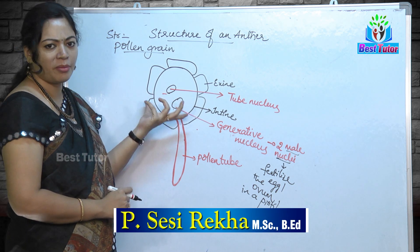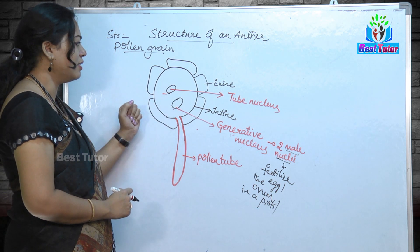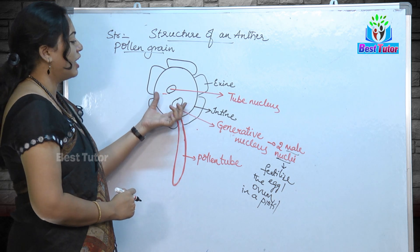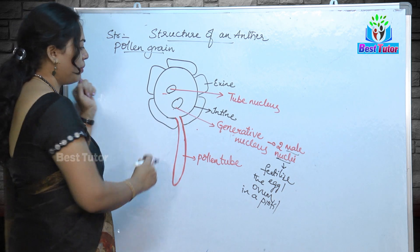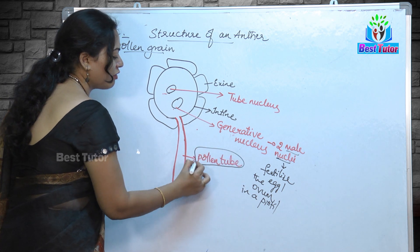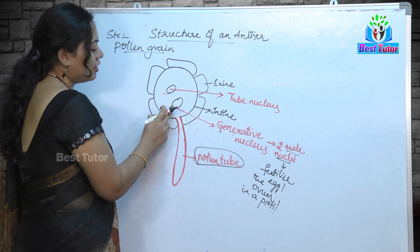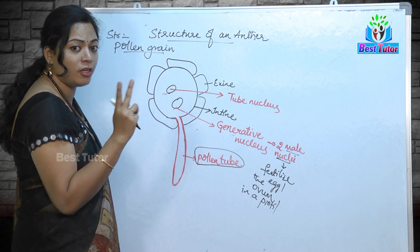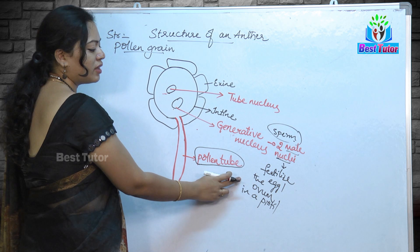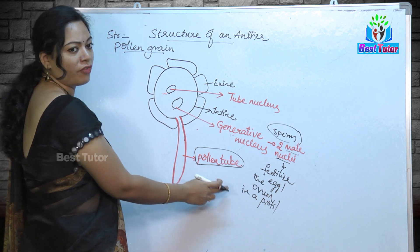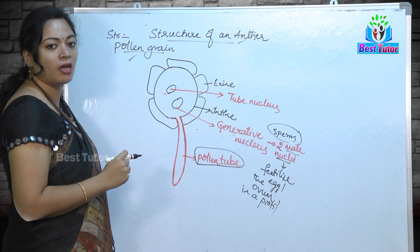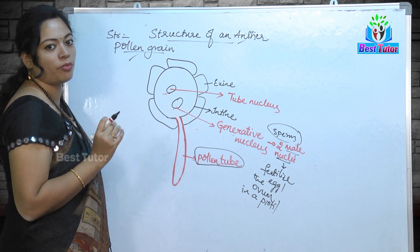In summary, the pollen grain can have any shape and size depending on the flower. It has two covering membranes — exine, the outer membrane, and intine, the inner membrane. Inside the cytoplasm we have two nuclei: the tube nucleus, which forms the pollen tube during fertilization, and the generative nucleus, which produces two sperm nuclei that fuse with the egg in the gynoecium. This is the structure of the anther and pollen grain involved in pollination and fertilization.